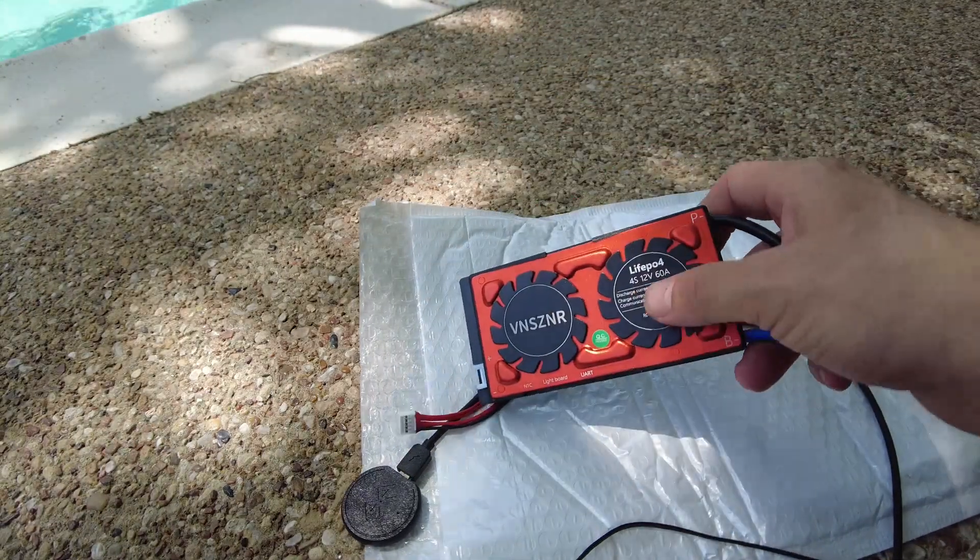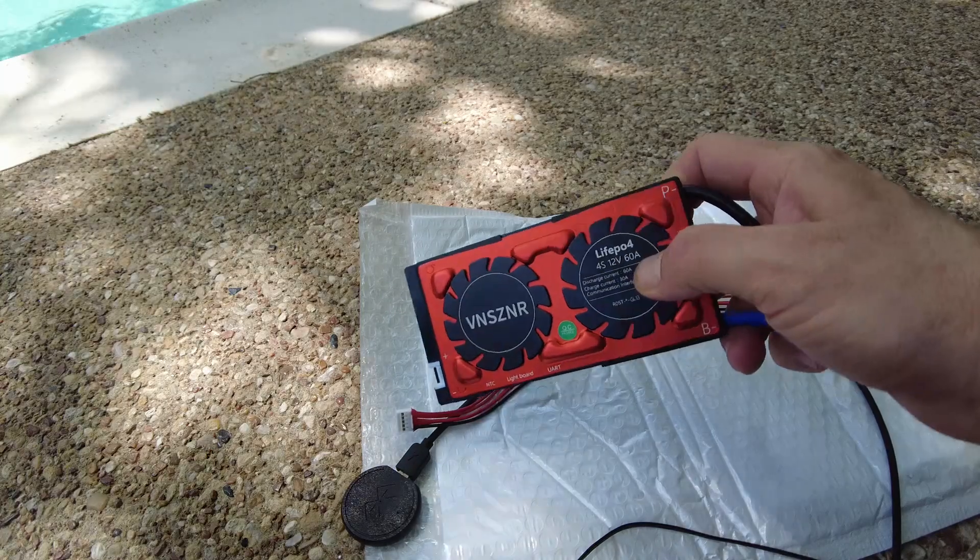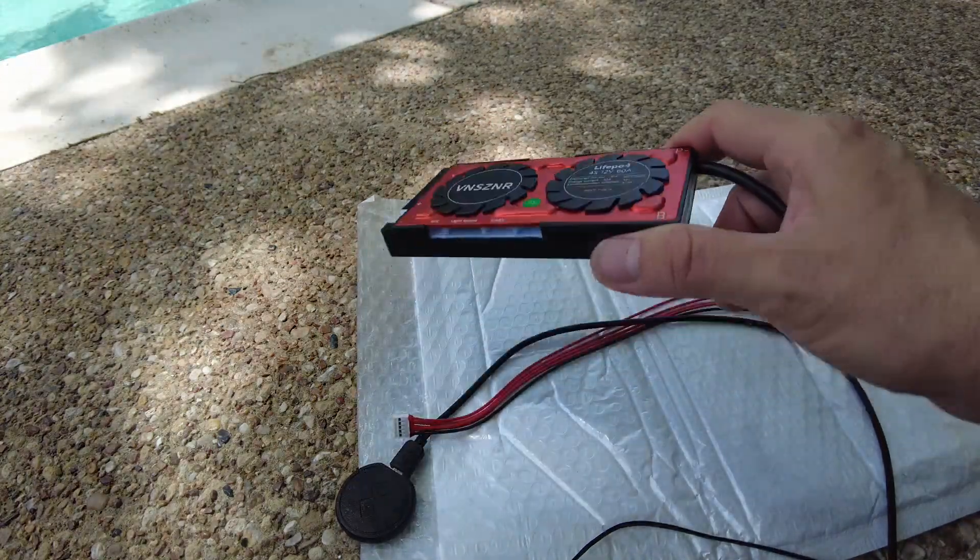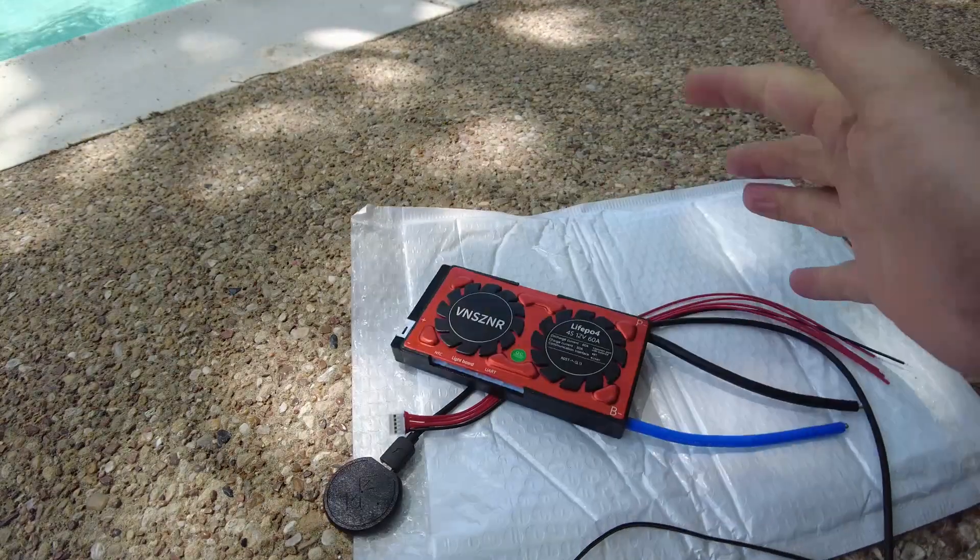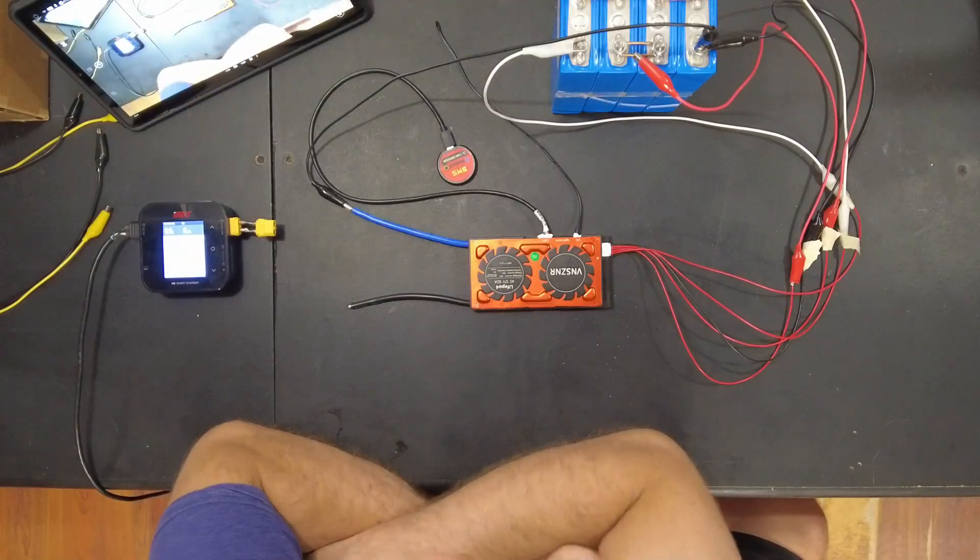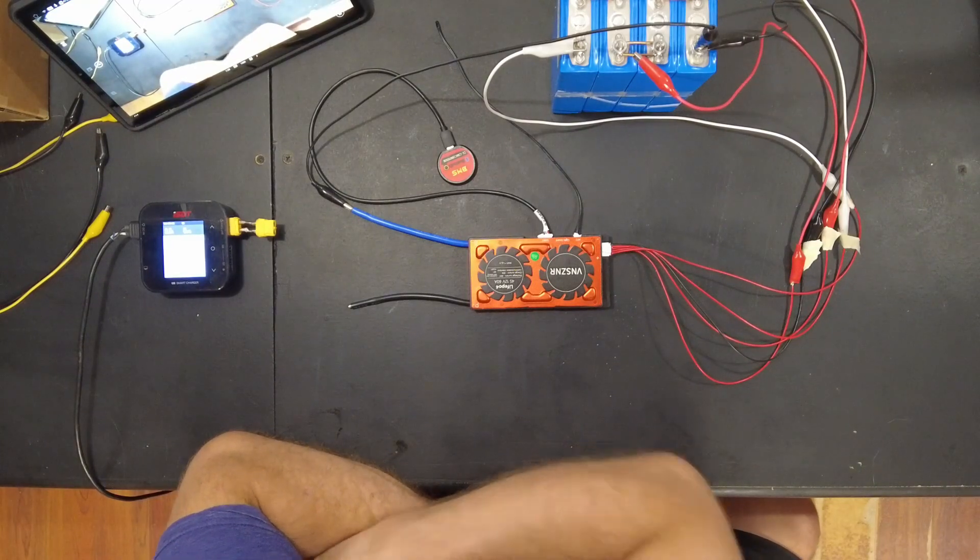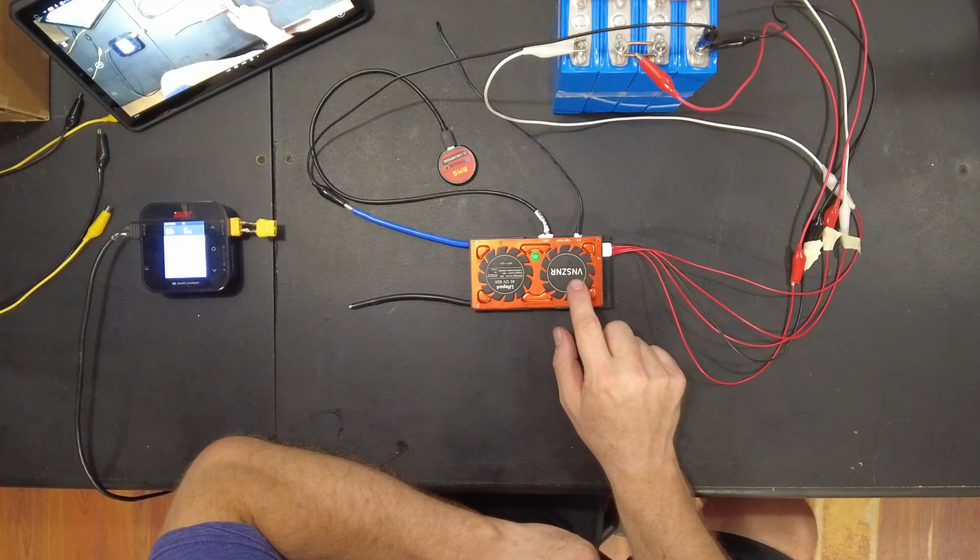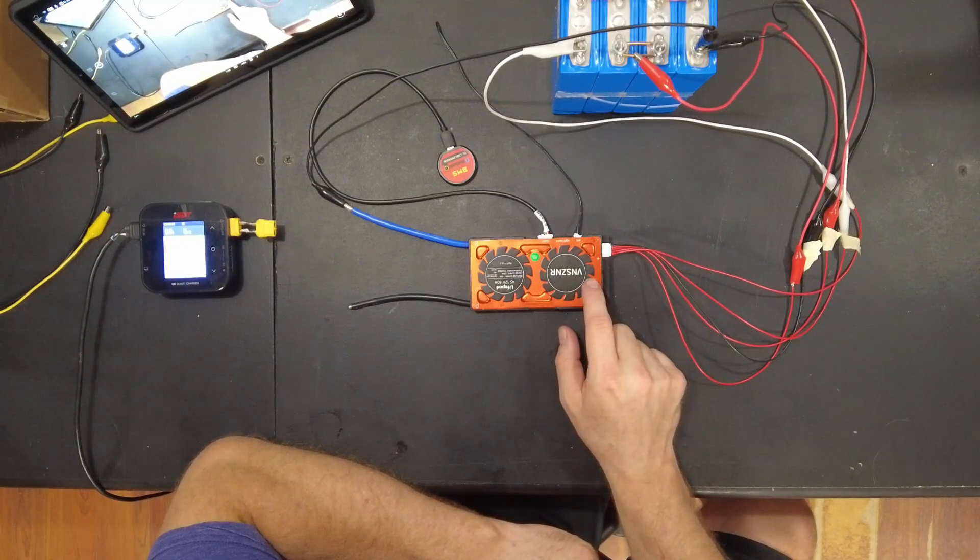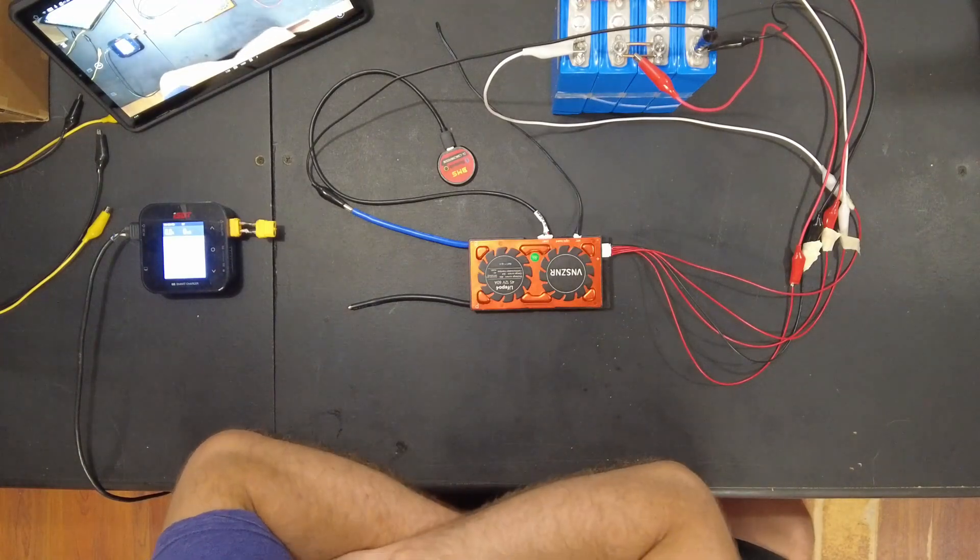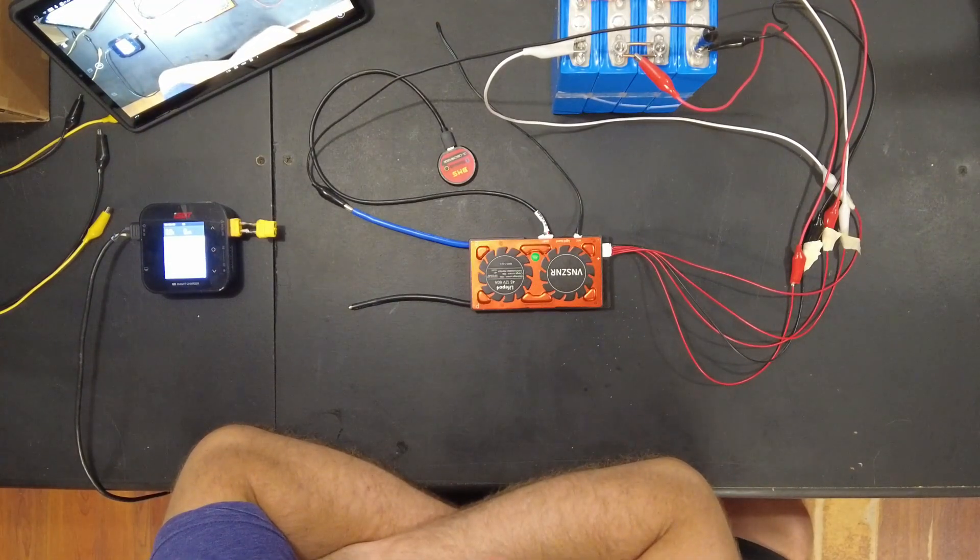So we're going to build up a pack. This is a 4S 60 amp. We're going to build up a pack and strap this guy on it and see how it performs. Alrighty guys, so I've got the VNSZNR BMS hooked up to a little battery pack, just temporary so we can play with it and test it out.